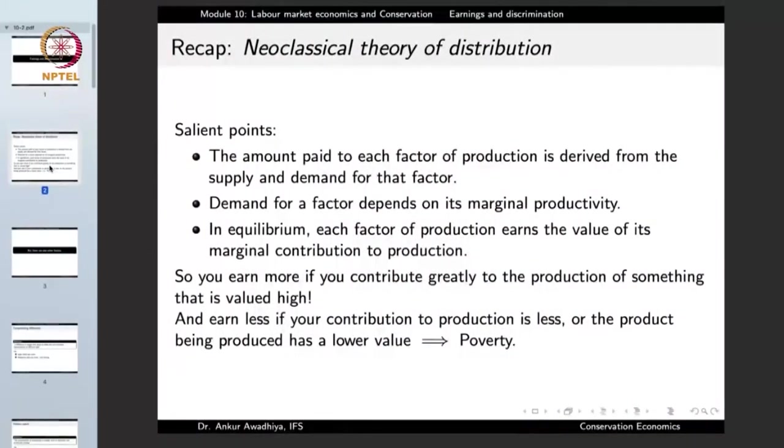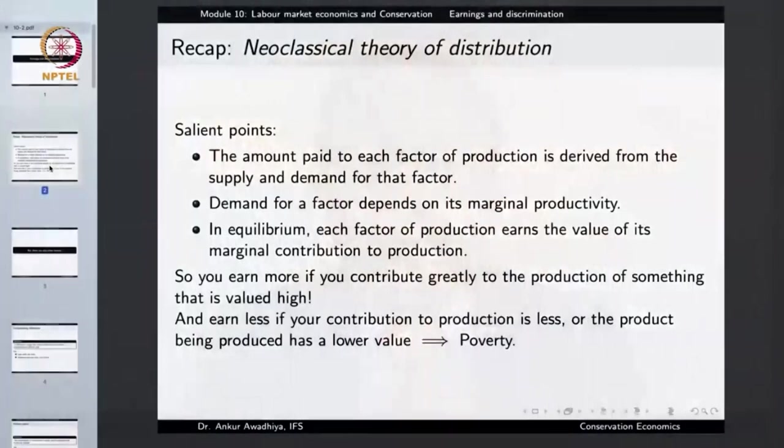Second, the demand for a factor depends on its marginal productivity, which means that if a person is giving out a larger amount of output, their marginal productivity is higher, and in that case the wages offered will also be higher.